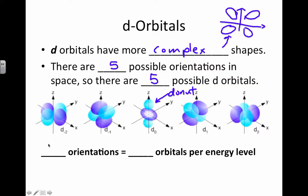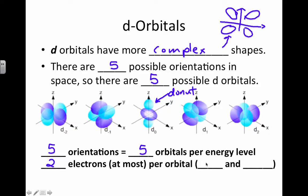All right, so let's summarize. There are five possible orientations, which means five possible orbitals per energy level. We can only fit two electrons, at most, per orbital, one that spins up and one that spins down. Therefore, if five orbitals are all holding two electrons, that makes ten total electrons to fill all the d orbitals.